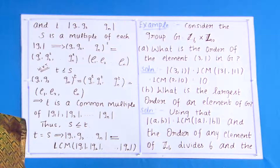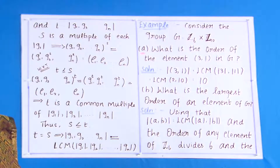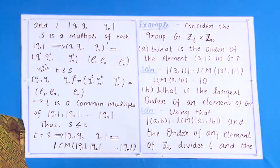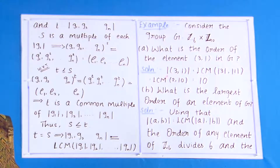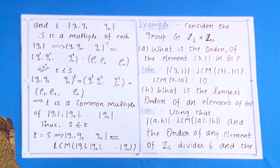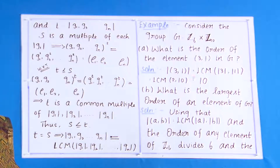Let us see an example. Consider the group G = Z₆ × Z₁₀. What is the order of the element (3, 1) in G? The order of (3, 1) equals the LCM of the order of 3 and the order of 1, which is LCM(2, 10) = 10.